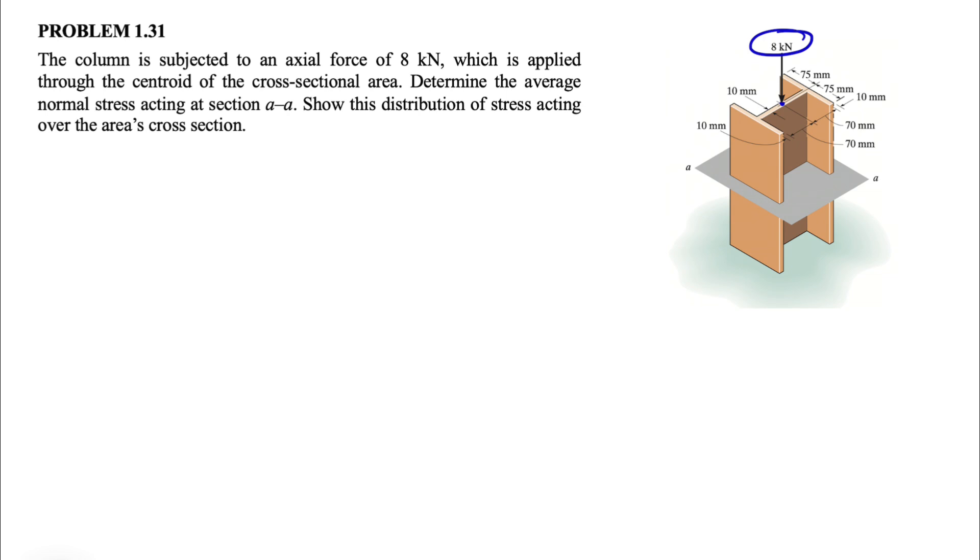We need to determine the average normal stress acting at section AA. So we can see this gray plate that is crossing this beam. And the last part, we are asked to show the distribution of the stress acting over the area's cross-section.